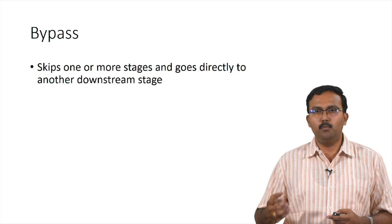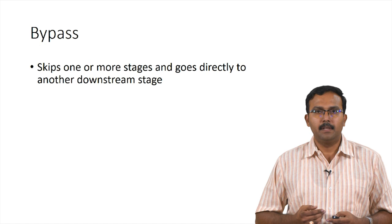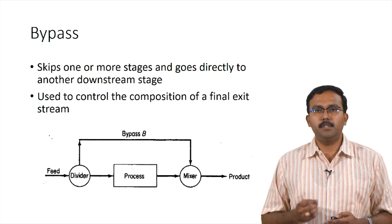Welcome to today's lecture on bypass. We have now looked at different processes in material balance systems, including recycle, which is a critical aspect in any bioprocess or chemical industry. Similar to that, there is another process called bypass. Bypass is basically bypassing a process — a stream which skips one or more stages and goes directly to a process down the line. This is primarily used to control the composition of a final exit stream.